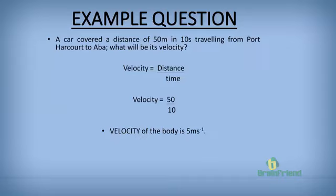Let's look at a simple example involving velocity. A car covers a distance of 50 meters in 10 seconds, traveling from Port-A-Kot to Aba. Velocity is displacement divided by time: 50 meters divided by 10 seconds gives 5 meters per second in the direction of Aba, because it's moving from Port-A-Kot to Aba.